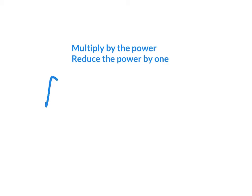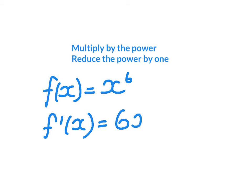For example, if I have a function, which is x to the power of 6, the derivative would be, we multiply by the power, which is 6, and we reduce the power by 1, 5.